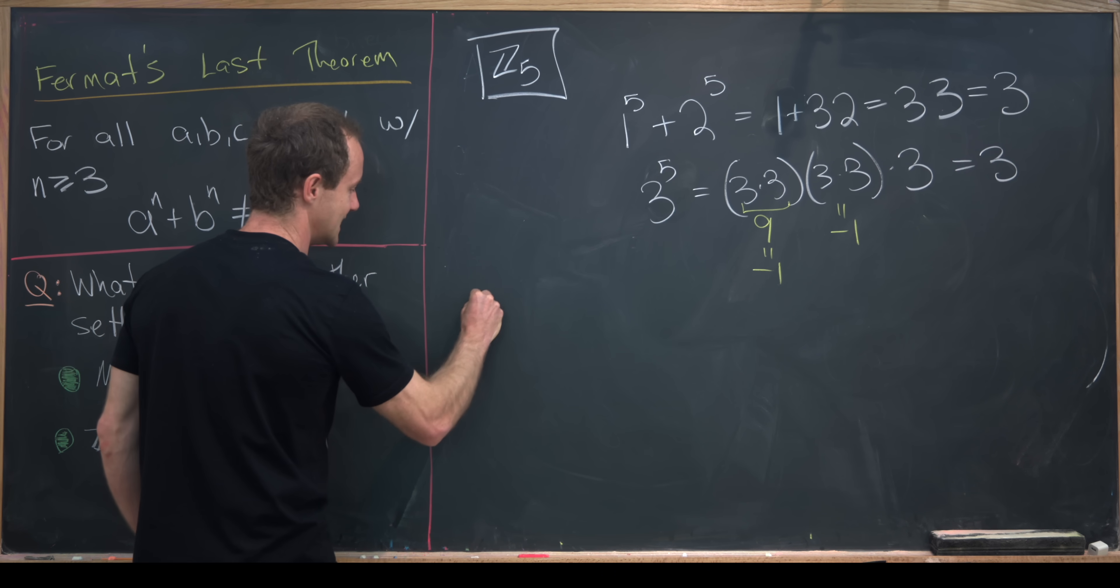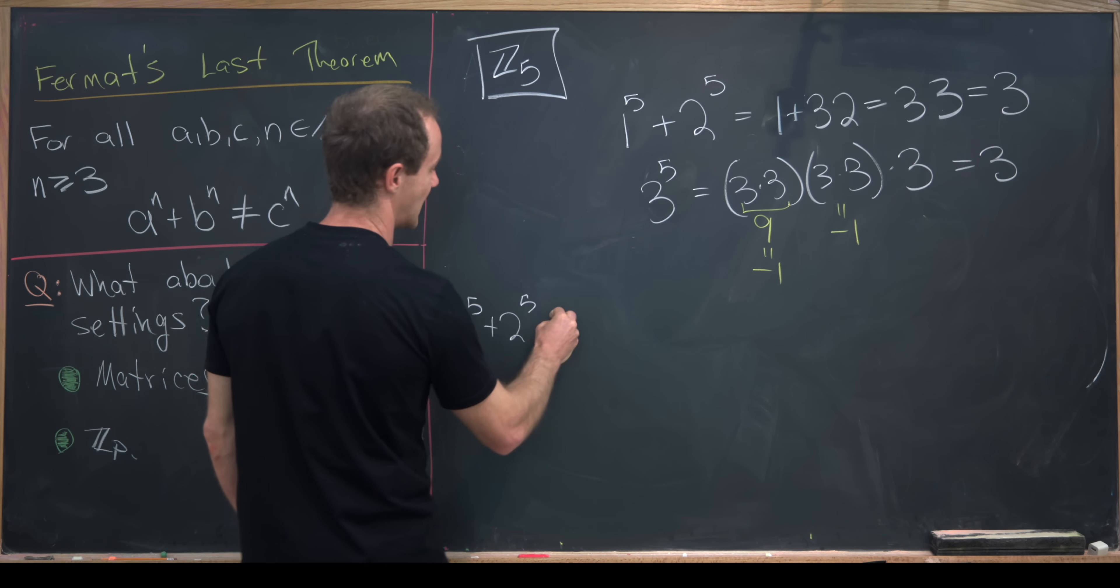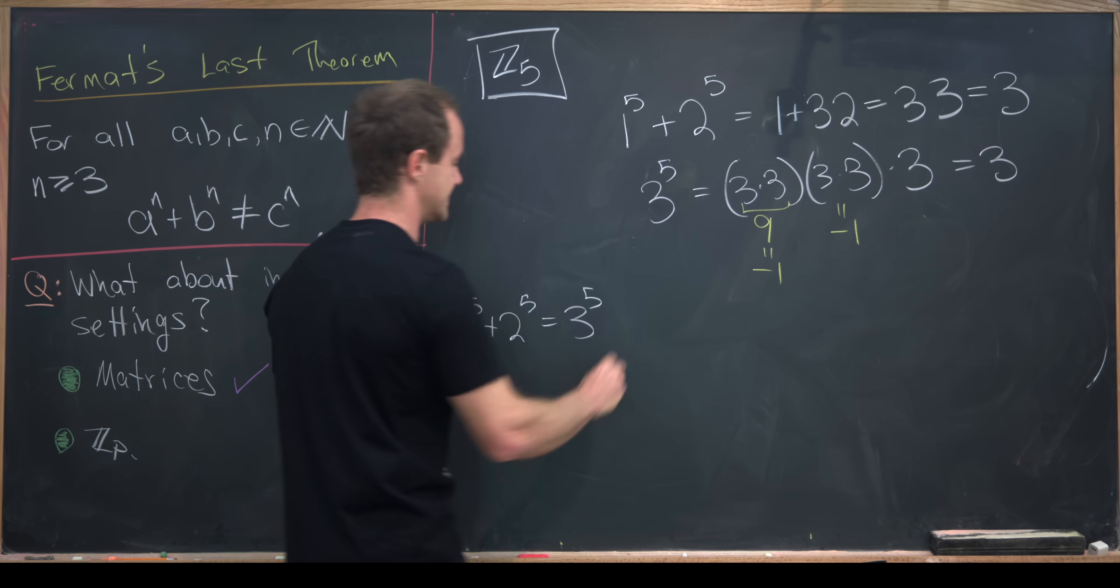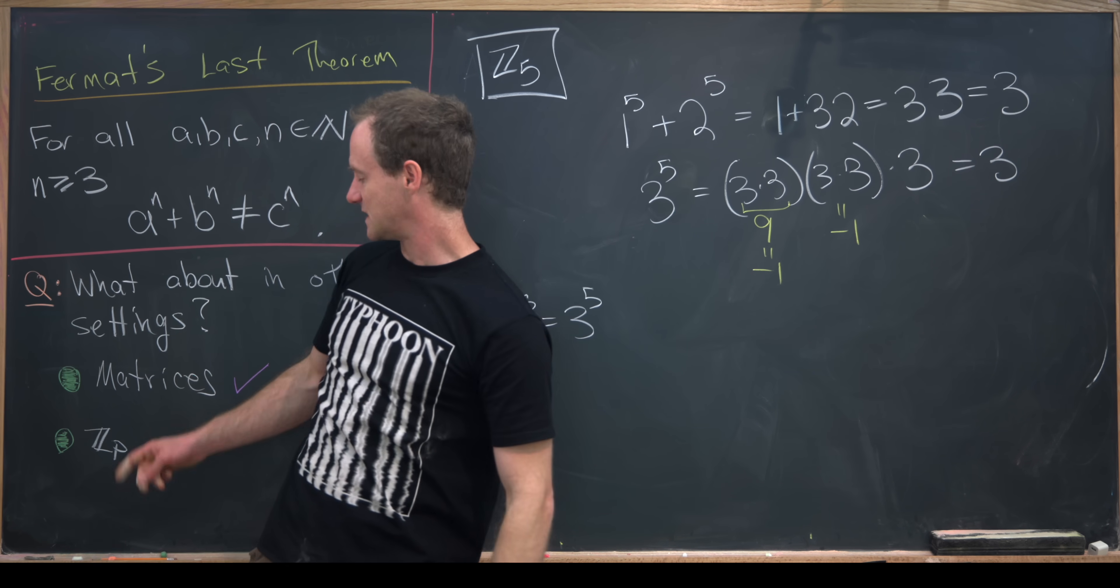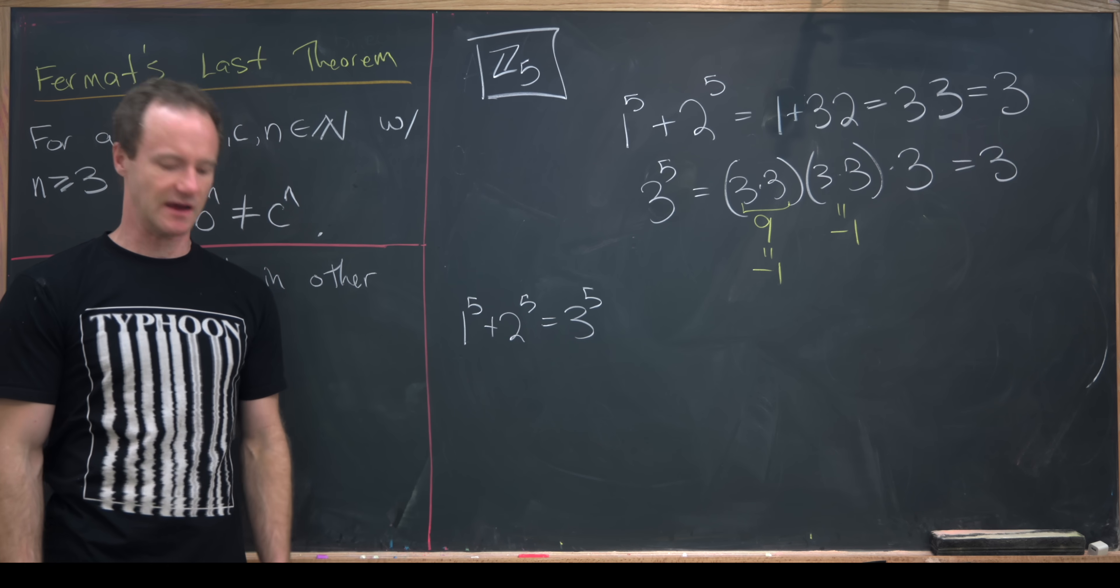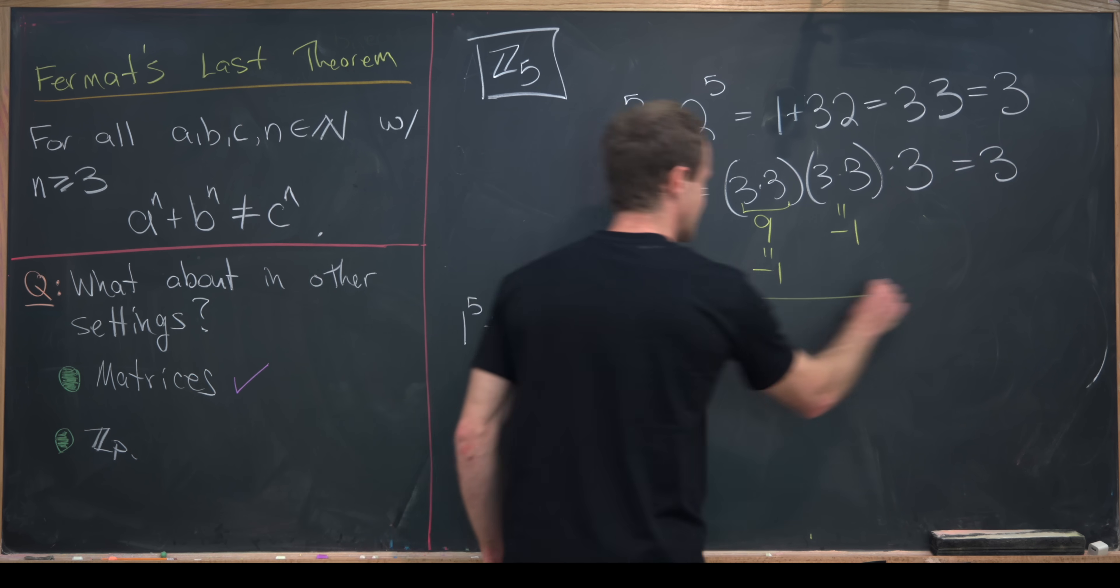So let's notice that inside of Z5, we have 1 to the 5 plus 2 to the 5 is equal to 3 to the 5. Again, giving us an example that Fermat's Last Theorem does not hold inside of Z5. But like I said, this is a bit of a cheat.